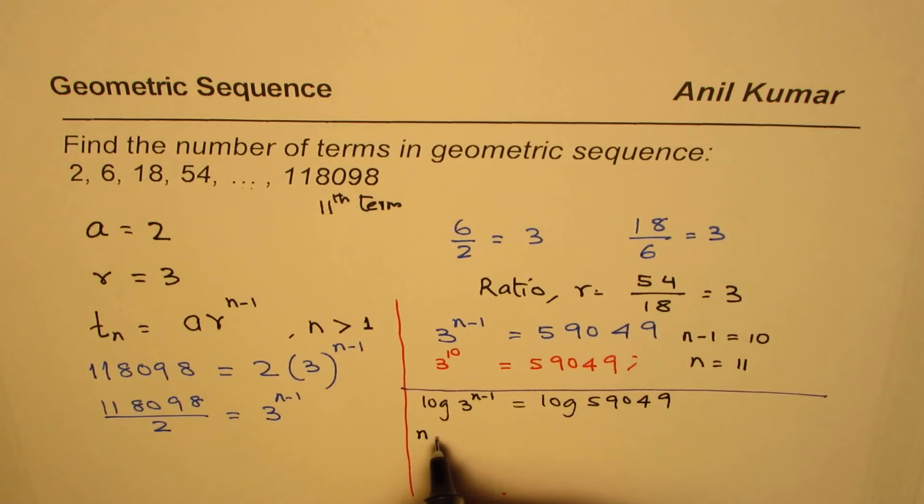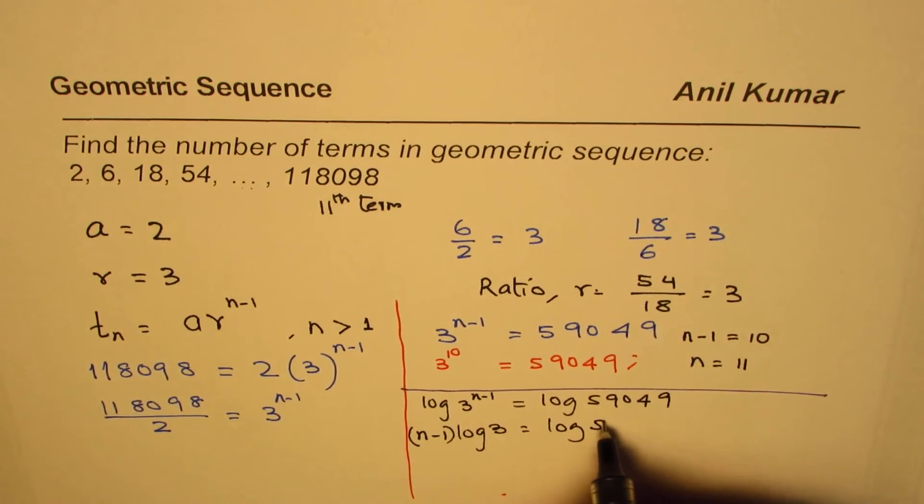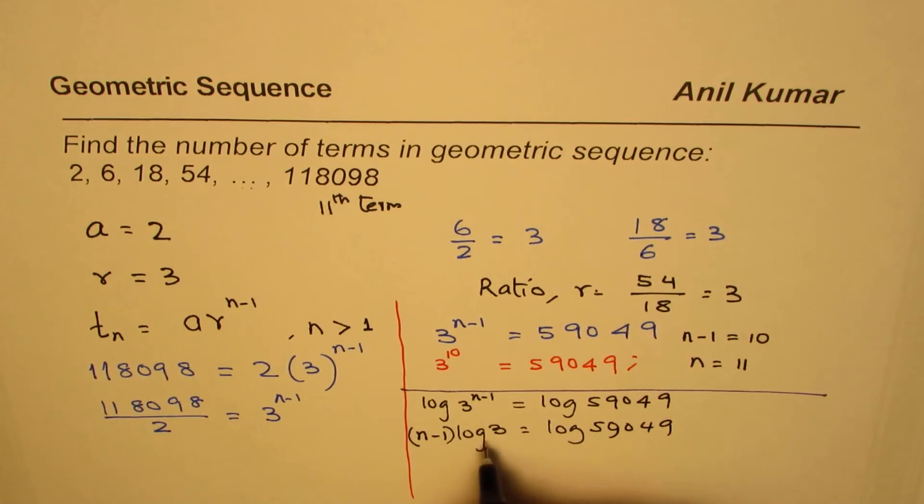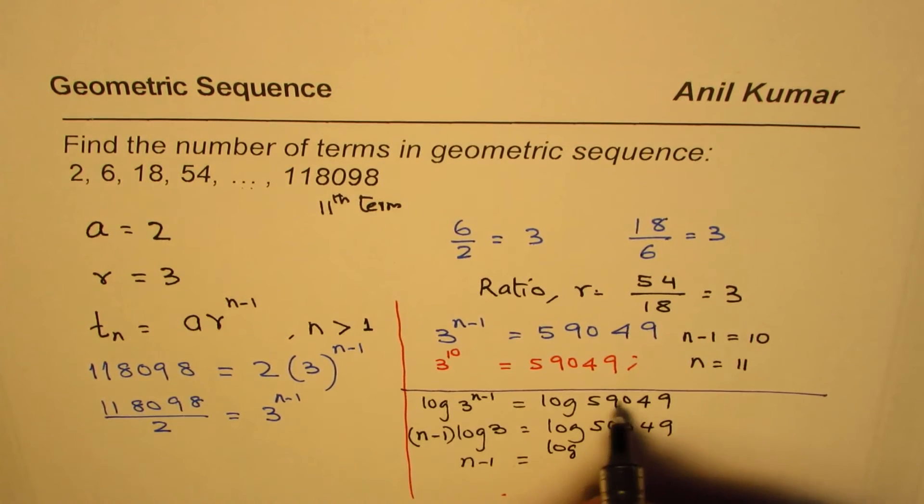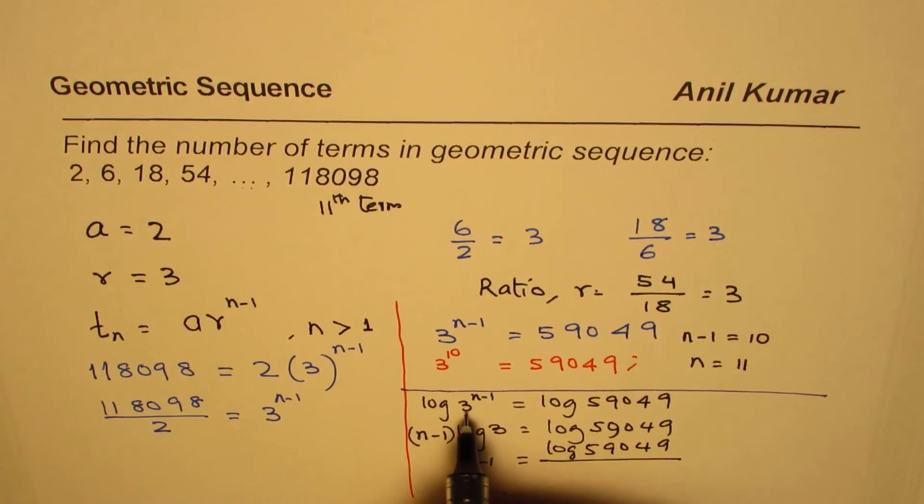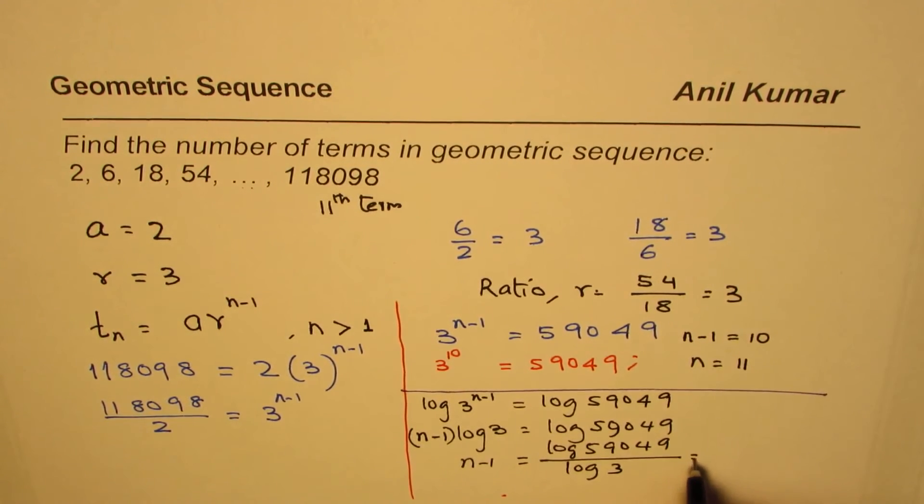So this really becomes n minus 1 comes here, log of 3 equals to log of 59049. And then we can find what n minus 1 is. So n minus 1, this exponent, is ratio of log of that number 59049 divided by log of the number here, so we just log 3 and then you can find.